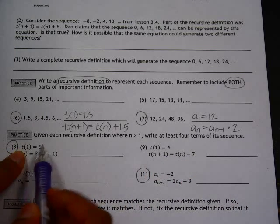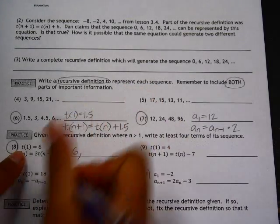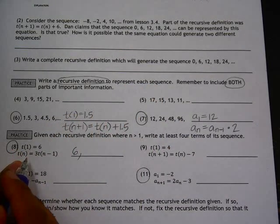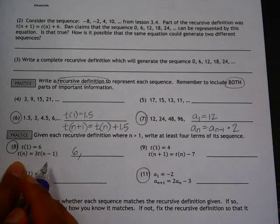So in number 8, the first term is given as 6. The recursive definition tells you how to get the next term.